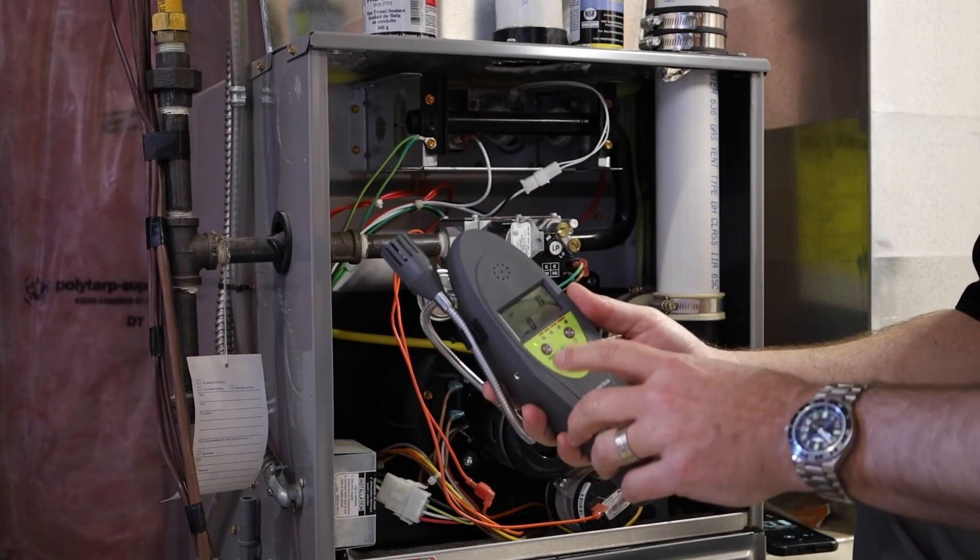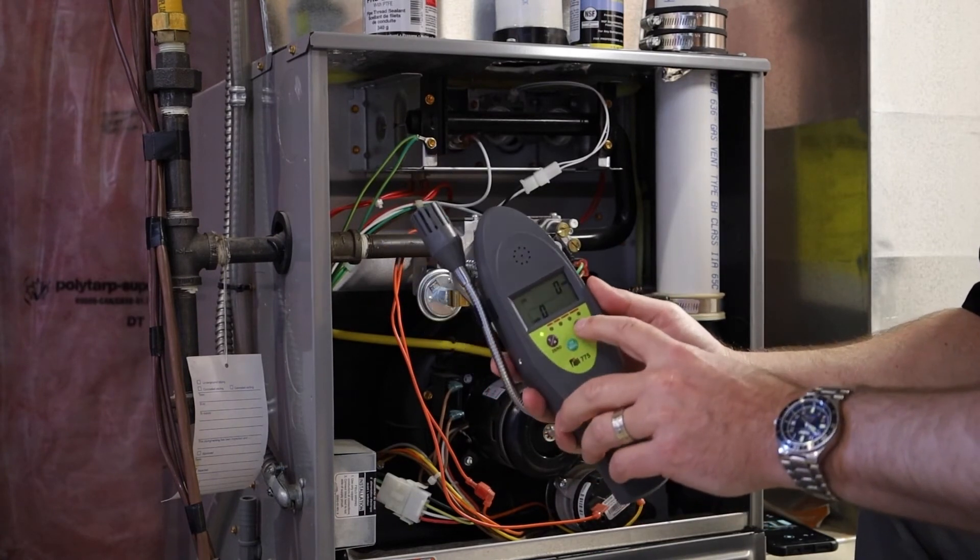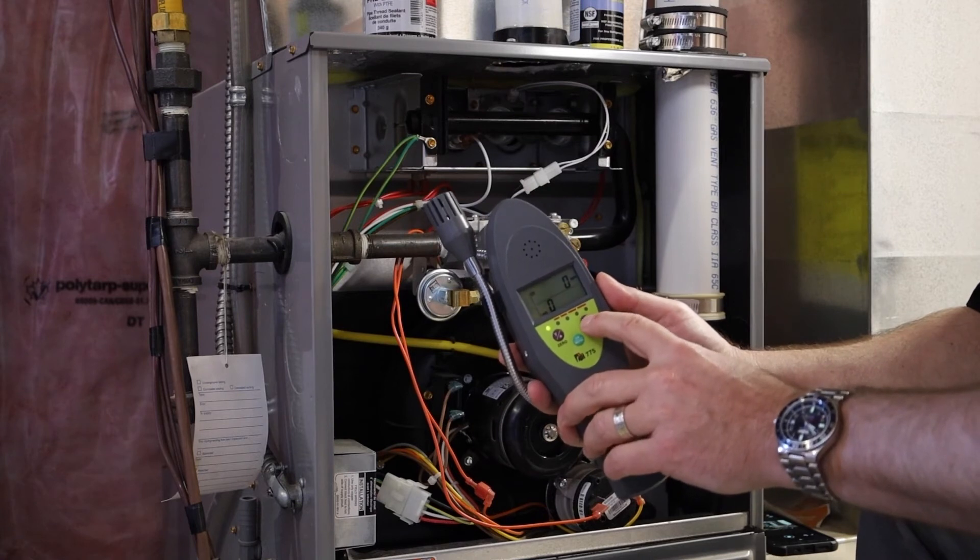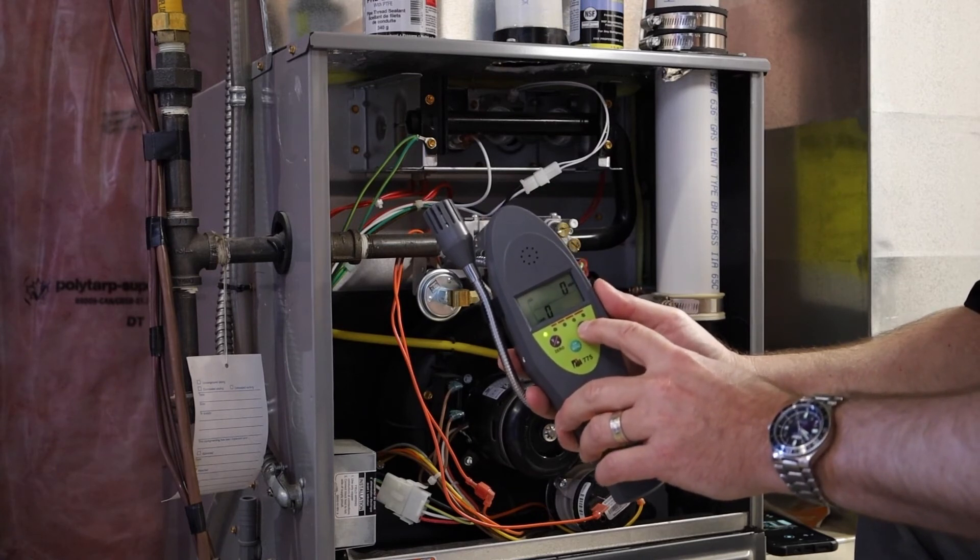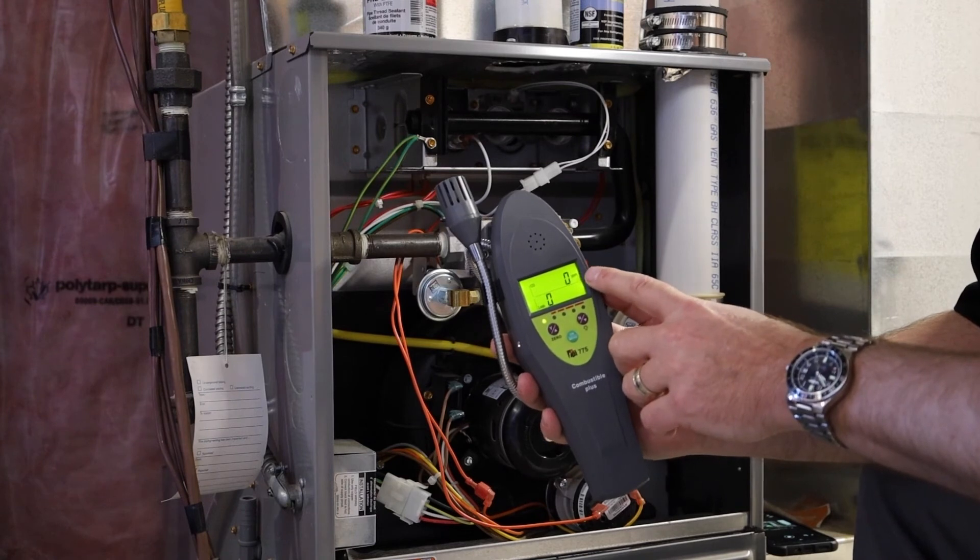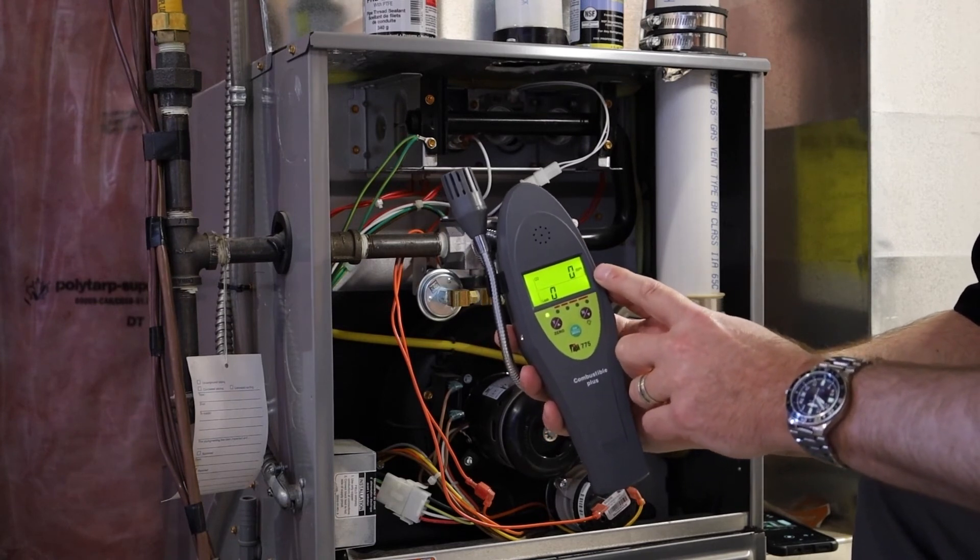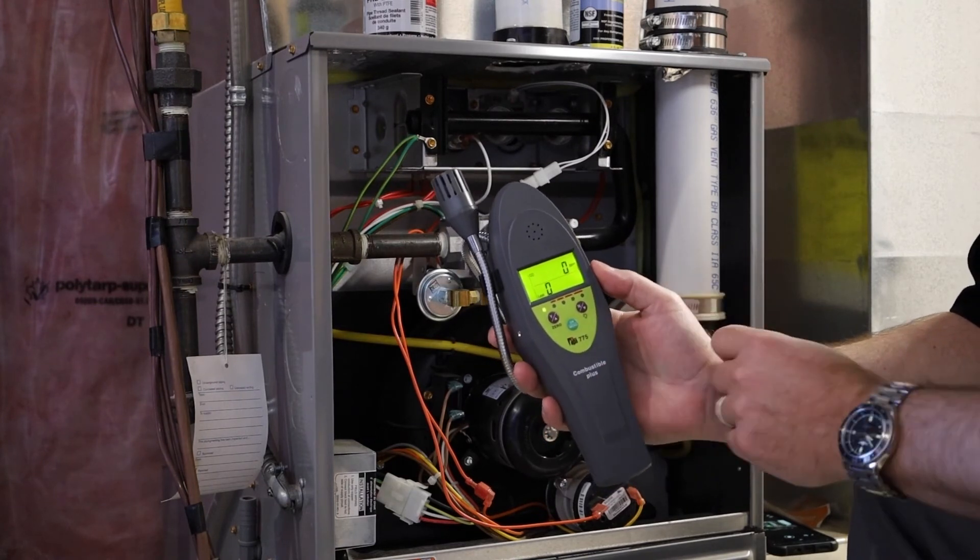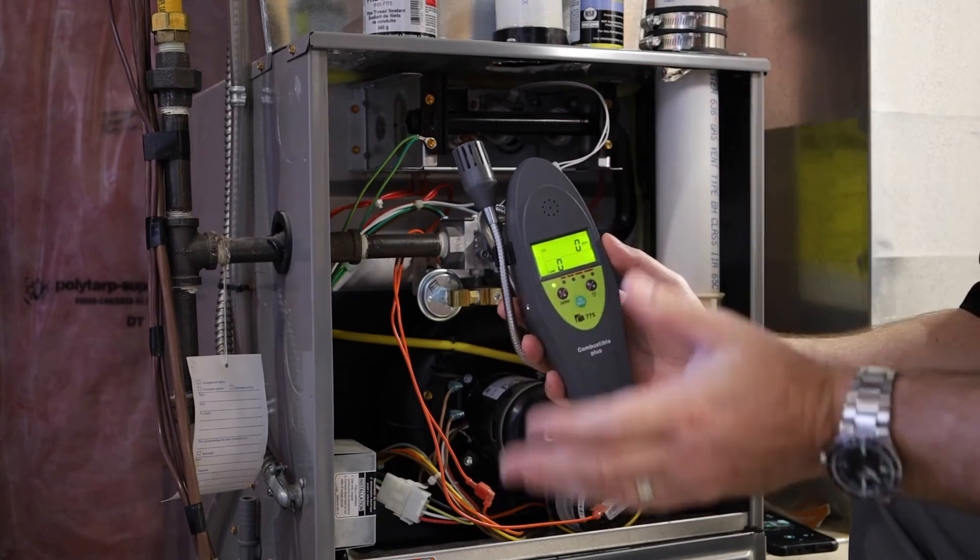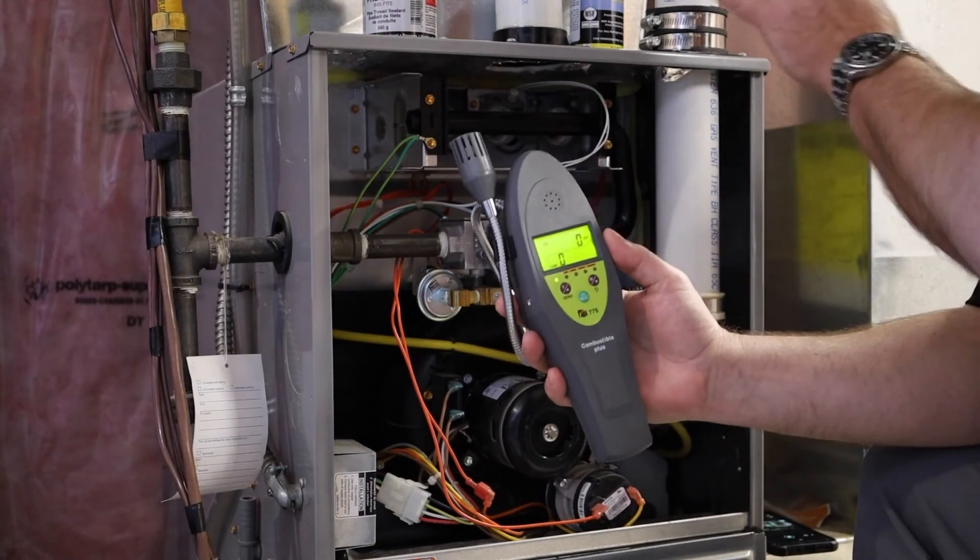So again, this one is giving us an LCD display. And I'm just going to turn on the backlight, make sure you can see that good. And it shows right here, CO in parts per million. So this will actually measure up to 2,000 parts per million. Again, this is just for indoor air quality. It's not for inside the flue of the appliance.